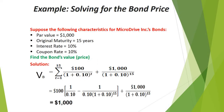Here is an example of a bond valuation problem. The par value of this bond is $1,000, which will be given to investors at maturity. The original maturity of this bond is 15 years, so par value will be given after 15 years. Market interest rate is 10% and the coupon rate is also 10%, so the coupon payment IND is $100. Using the formula, the value of this bond is $1,000.